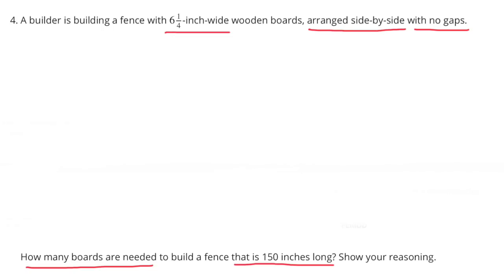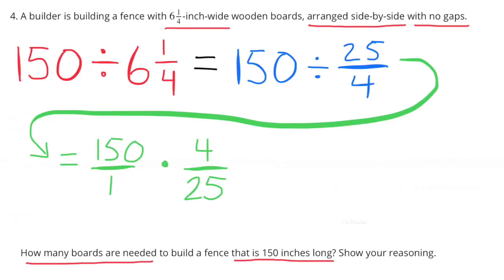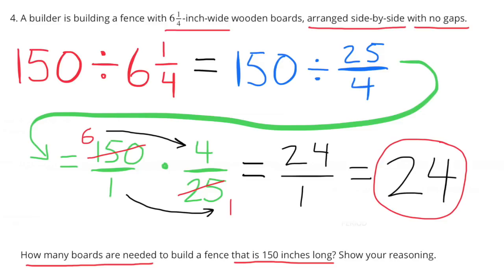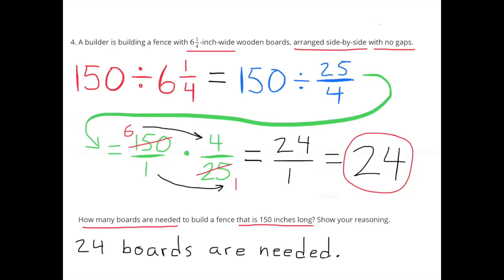Problem 4: A builder is building a fence with 6 1/4-inch wide wooden boards arranged side by side with no gaps. How many boards are needed to build a fence that is 150 inches long? 150 inches divided by boards that are 6 1/4 inches wide can be written as 150 divided by 25/4. To find this answer, we multiply by the reciprocal: 150 × 4/25 equals 24. So 24 boards are needed.